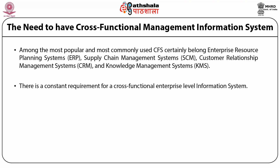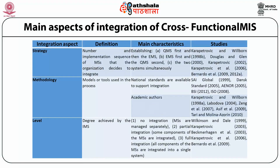There is a constant requirement for a cross-functional enterprise-level information system. The main aspects of integration of cross-functional MIS are divided into integration aspect and the main characteristics of it. The first is strategy — the main characteristic of which is establishing QMS first and then the EMS, or EMS first and then QMS, or both systems simultaneously. The methodology includes models or tools used in the process, and the characteristics are the national standards available to support integration and also academic authors. The level for the integration aspect is the degree achieved by the IMS, with characteristics of no integration, partial integration, and full integration.